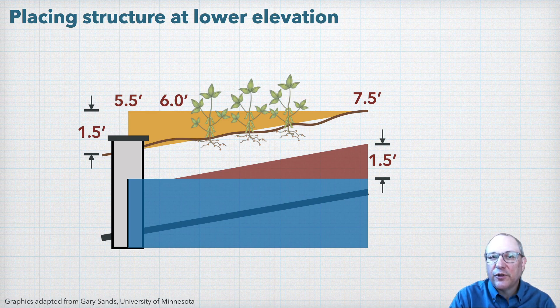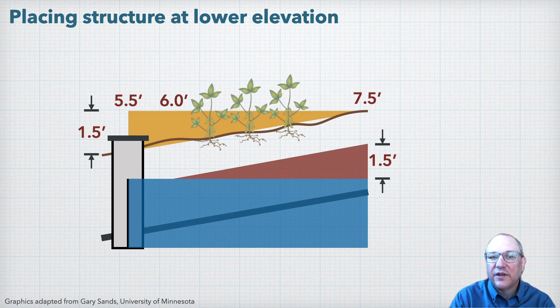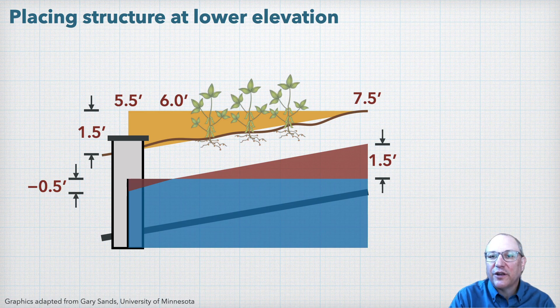If the control structure is below the bottom contour of the management zone, the opposite happens. Now the potential water table rise will be above our target depth.